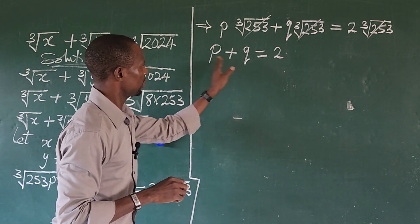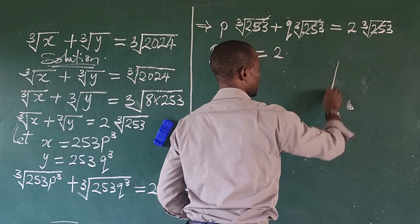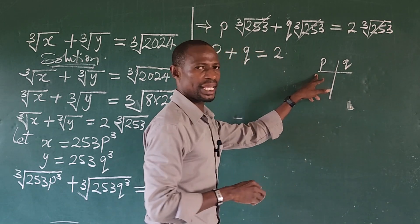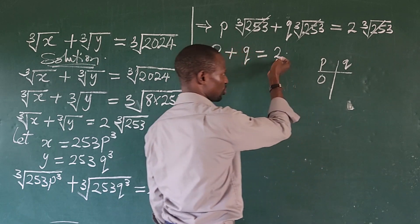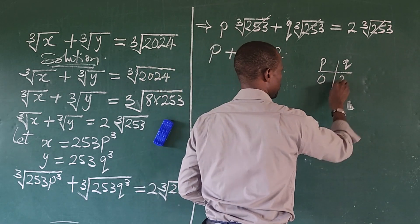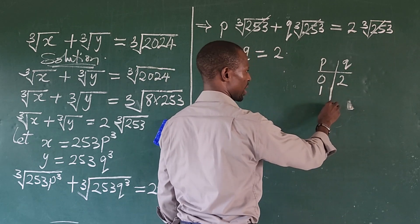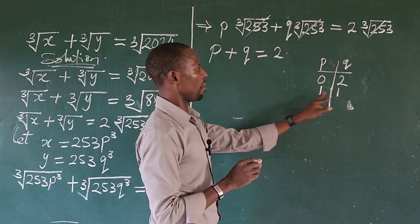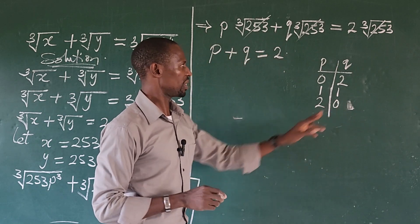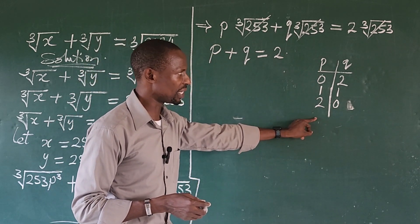How do we find two quantities that satisfy p plus q equals 2? We use the trial-and-error method. We're looking for integer values. If p is 0, then q must be 2, because 0 plus 2 equals 2. If p is 1, then q is 1, because 1 plus 1 equals 2. And if p is 2, then q is 0, because 2 plus 0 equals 2.